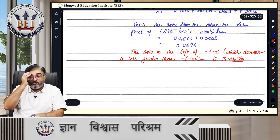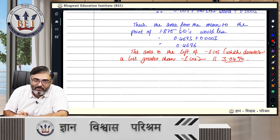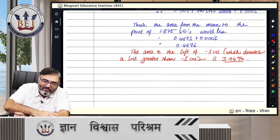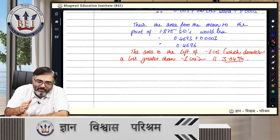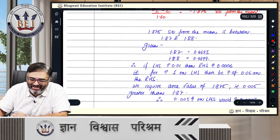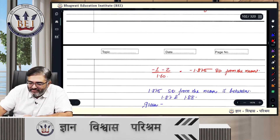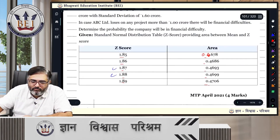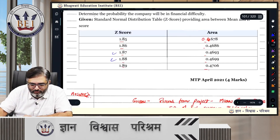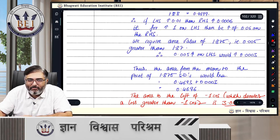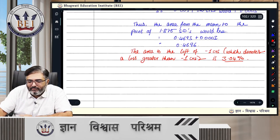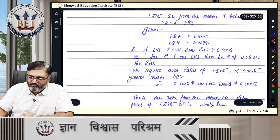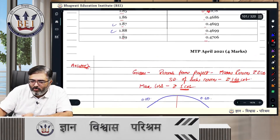In NPV problems, they used to ask: what is the possibility that NPV will be positive, given returns are normally distributed? So we calculated mean NPV, then plotted the probability — taking X as zero, because we had to figure out NPV greater than zero. That circus would then start. I had quite a few such problems in my book. One time at the institute, such a question came, but their answer was quite theoretical — how normal distribution helps in capital budgeting.